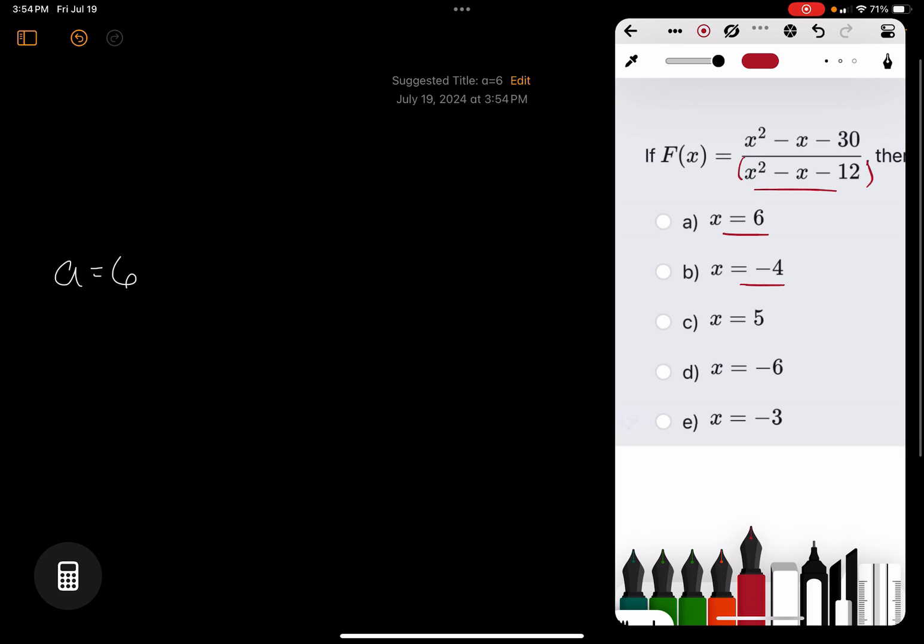And then just write out like, okay, well, a equals six. So a squared minus a minus 12 equals 18. And we could do that over and over again. We could say b equals negative four. And then we could say b squared minus b minus 12 equals eight and so on and so forth. Not very efficient, right?